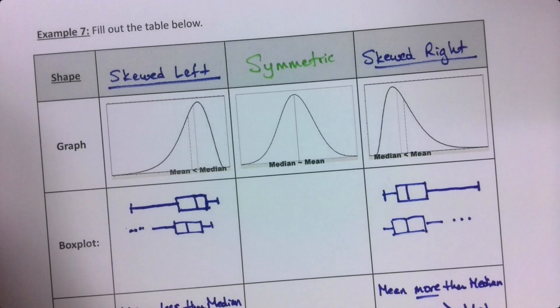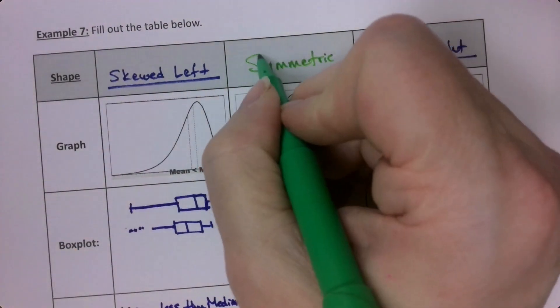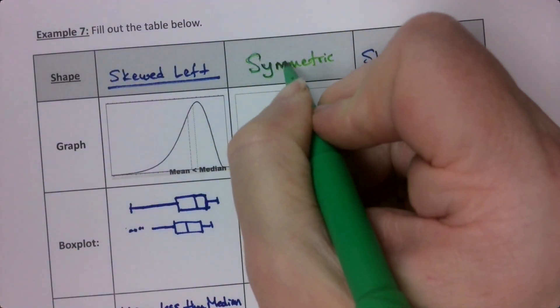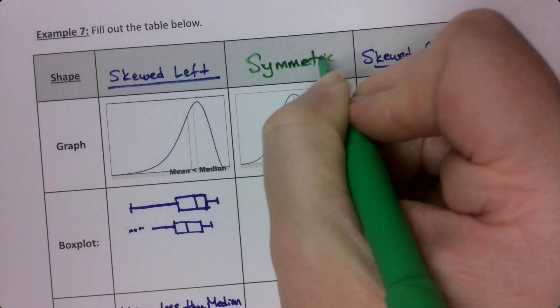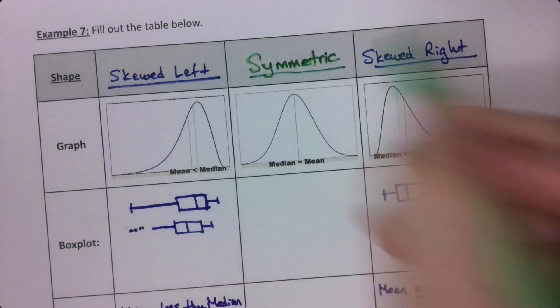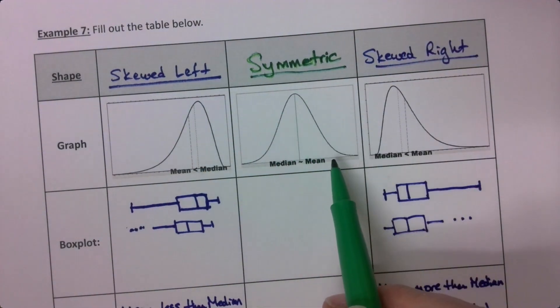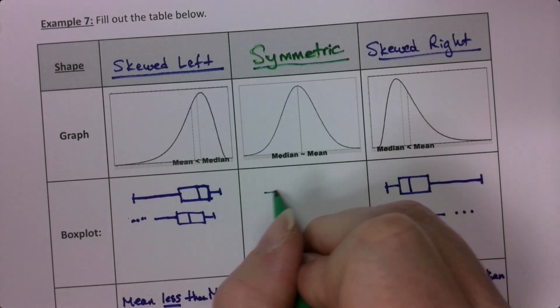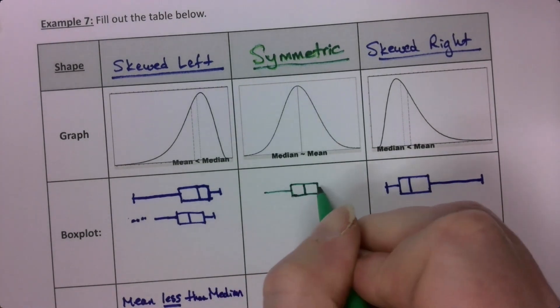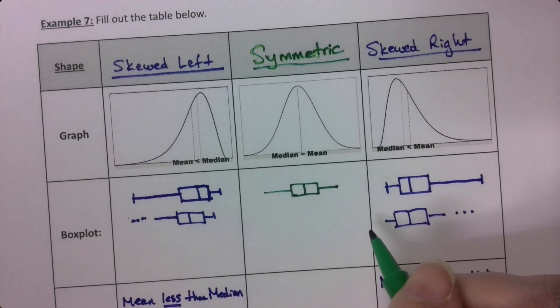Symmetric. Okay. So from chapter seven on, we work with symmetric graphs that look like this one. Now, in a box and whisker plot, that'll mean that the left and the right are more or less equal.